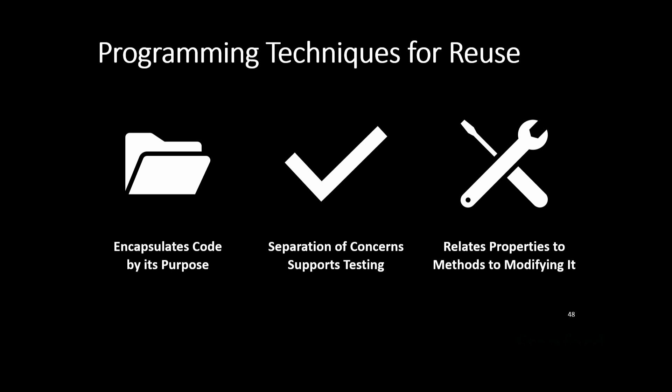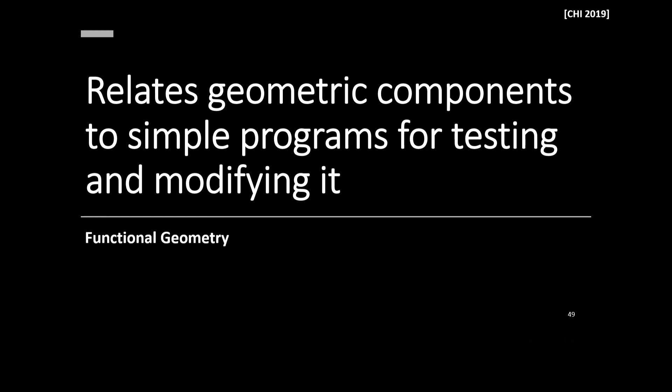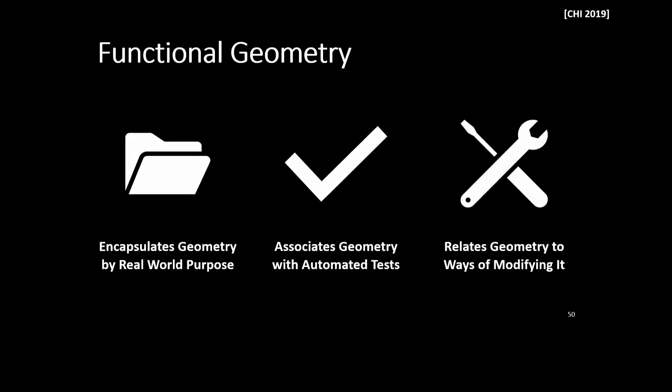Let's move away from programming languages — probably not the right interface for most contexts — and dig into what techniques programming languages offer that support amplifying expertise. We can encapsulate code by its purpose making things modular, separate concerns to support testing on specific units, and relate properties of methods to ways of modifying them to build and iterate in a defined way. To include this in fabrication, we need to think about how that interacts with geometry and physical objects. We introduce the concept of functional geometry, which relates geometric components to simple programs for testing and modifying them.